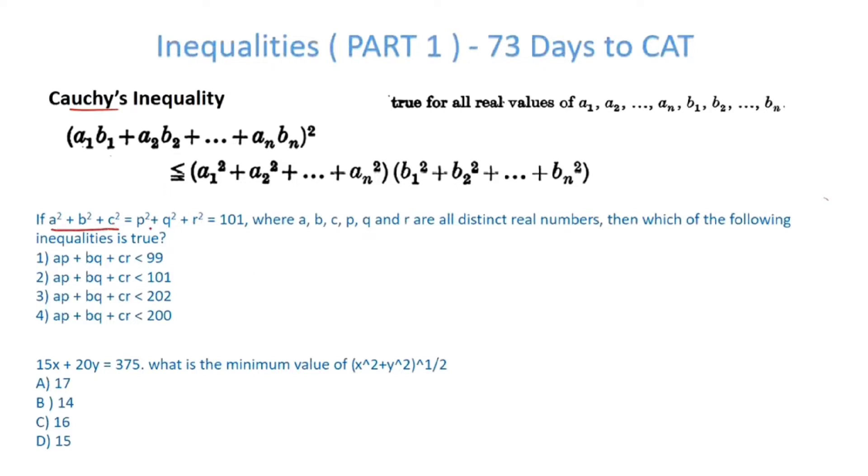Here we have a² plus b² plus c² is equal to p² plus q² plus r² is equal to 101. If you see here, a² plus b² plus c² into p² plus q² plus r² must be greater than equal to product and then sum and squaring. So ap plus bq plus cr squared.